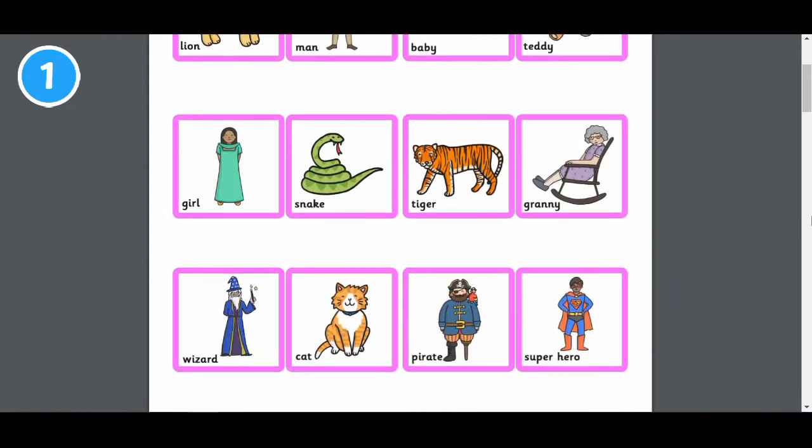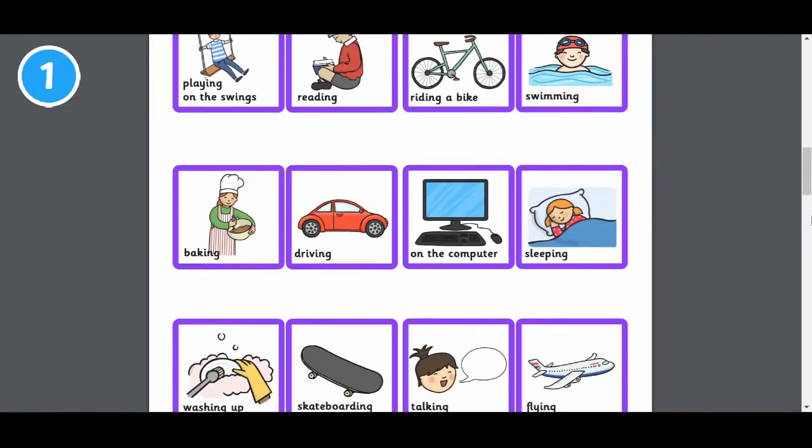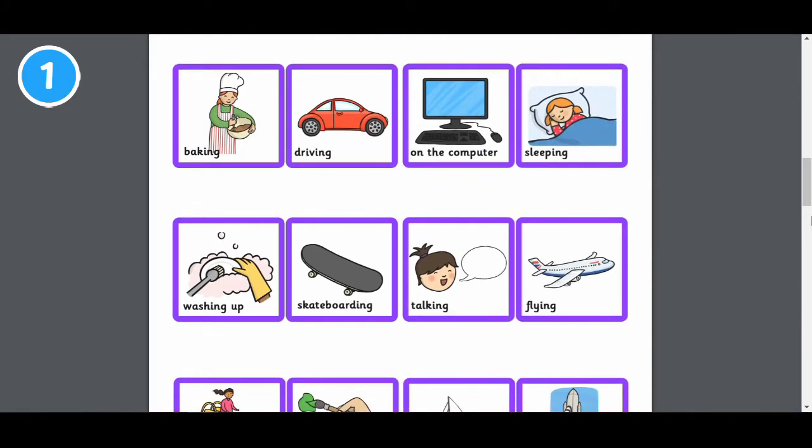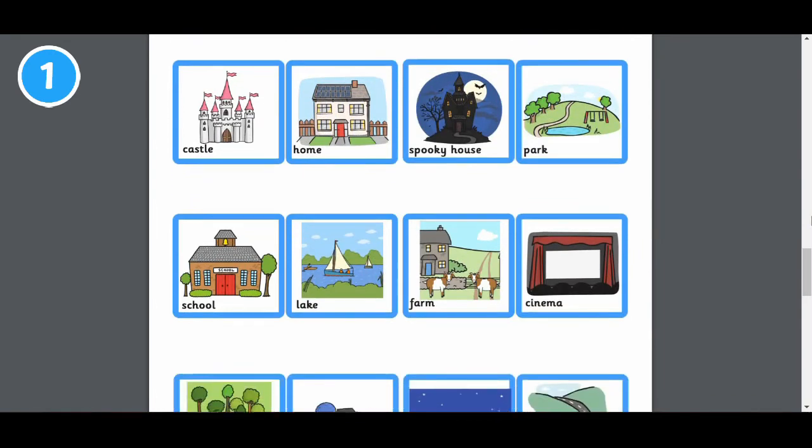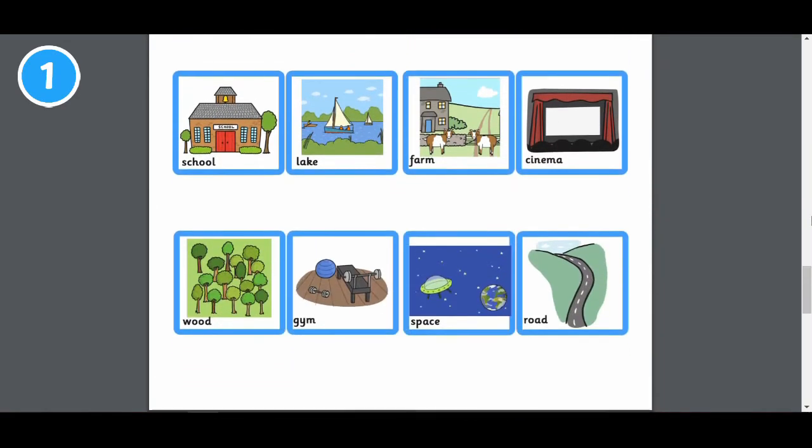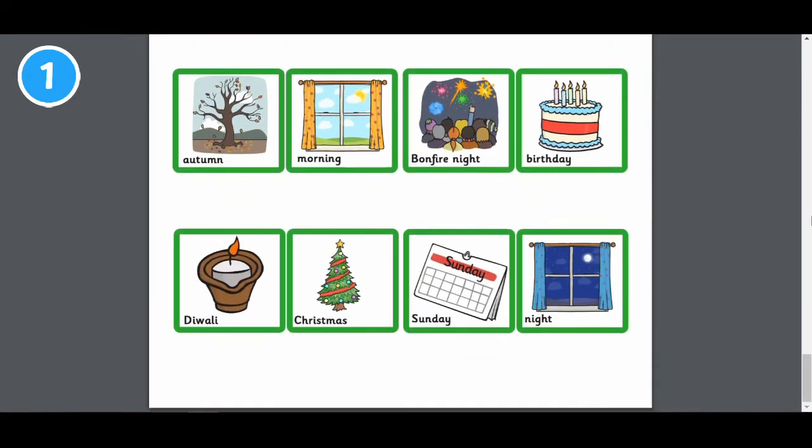These silly sentence cards are great for younger children learning to make sentences by putting words in the right order. Each group of cards is colour coded so you can easily tell whether a word is a who, what, where or when word. Just print them, cut them out and ask your child to select one card from each group and make a sentence using all the words.